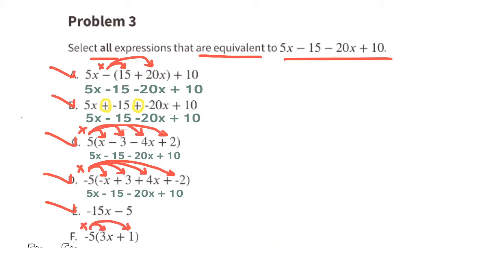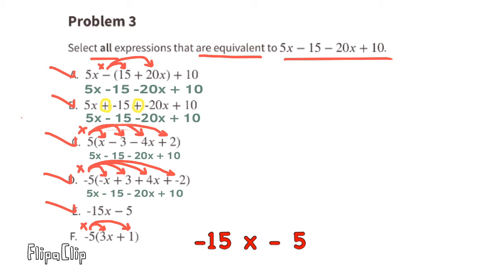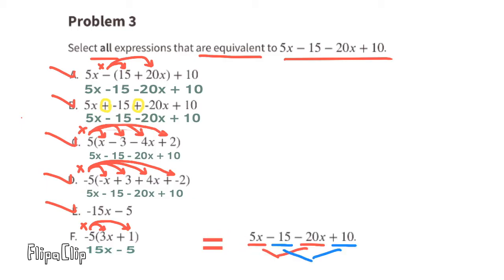Option F: negative 5 times 3x is negative 15x, and negative 5 times a positive 1 is a negative 5. So this expression is negative 15x minus 5, which is equivalent to the expression from E, which was equivalent to the original expression.